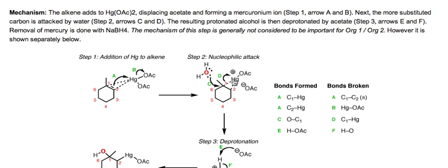In the next step (arrow C), water comes in. A lone pair from water attacks carbon-1 on the opposite side of the carbon-mercury bond—attacking from the backside. Note that it's attacking the more substituted carbon atom.